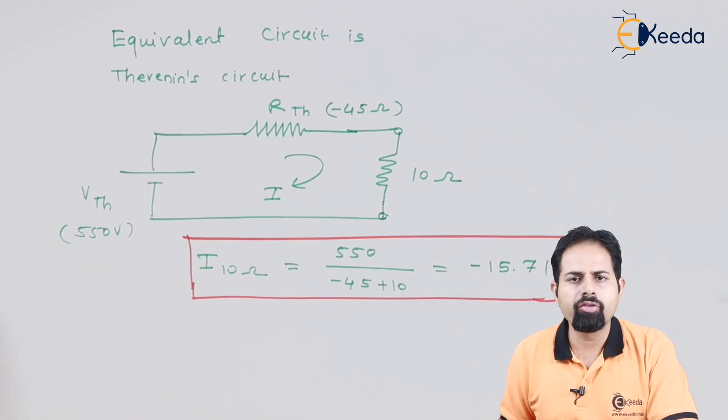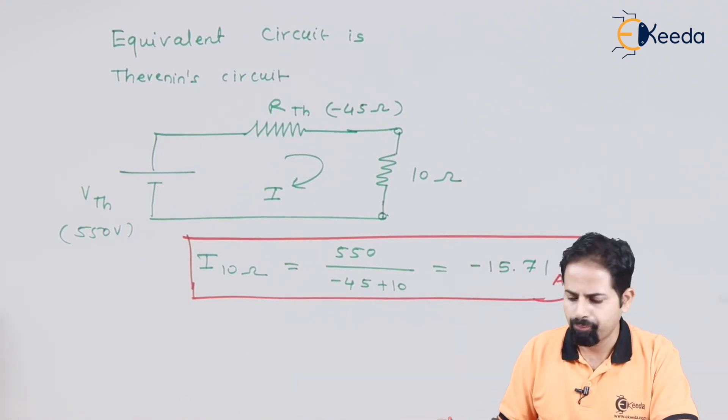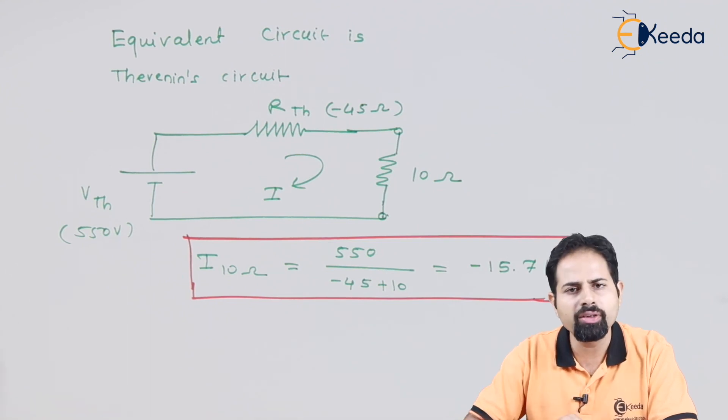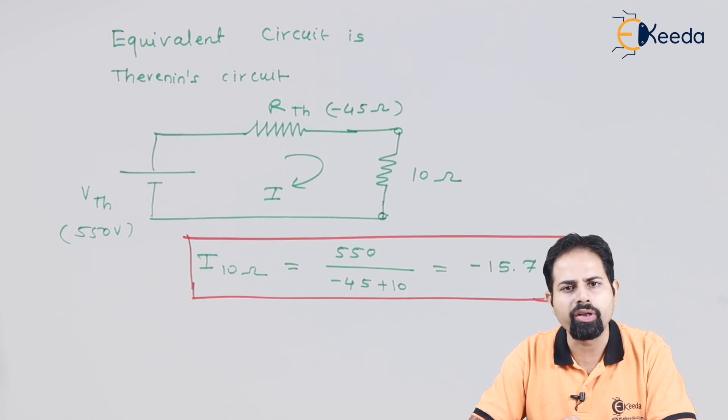So the current through 10 ohm resistor will be voltage divided by total resistance. So current that we got is minus 15.71. So that is the required answer. So that's the end of problem. So thank you very much guys for watching this video. Stay tuned to Veeda and please subscribe to Veeda. Thank you.